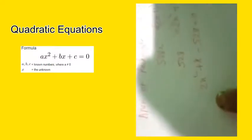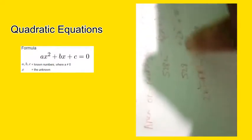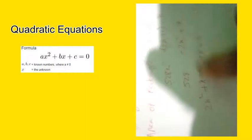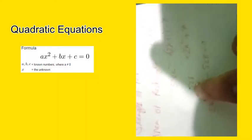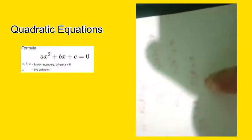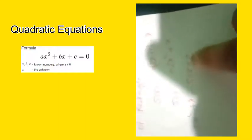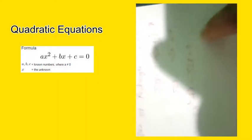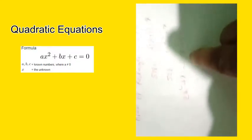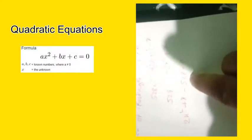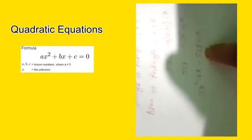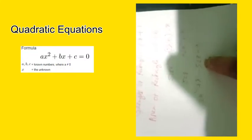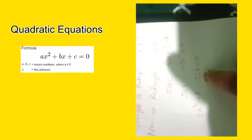That gives us 2x squared plus x, and bringing 528 to this side gives 2x squared plus x minus 528 equals 0. This is your quadratic equation for this problem. Now you can solve it yourself.